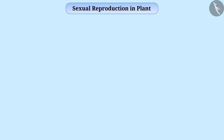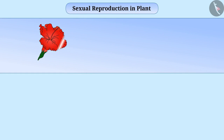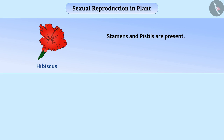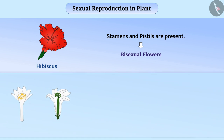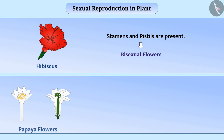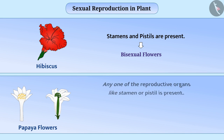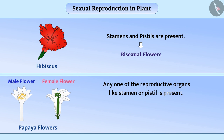Some flowers such as hibiscus have both the stamens and the pistils present in the same flower. These are called bisexual flowers. While some flowers such as papaya flowers have any one of the reproductive organs, either stamen or pistil. These are called unisexual flowers.